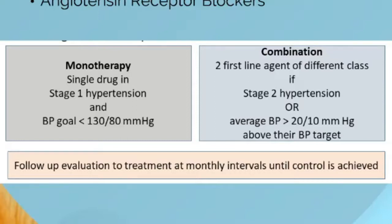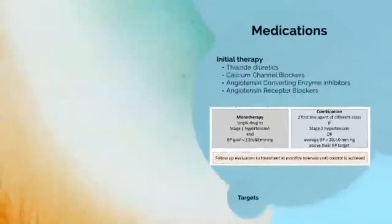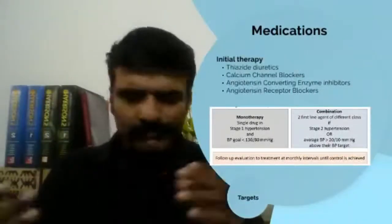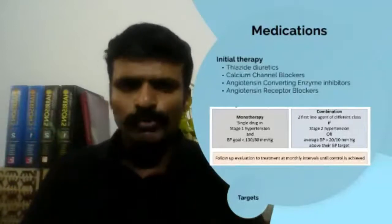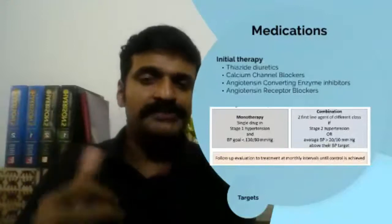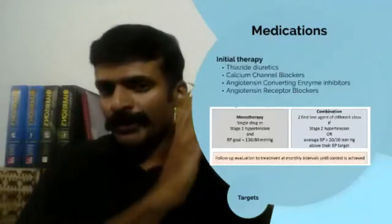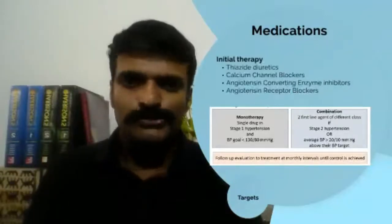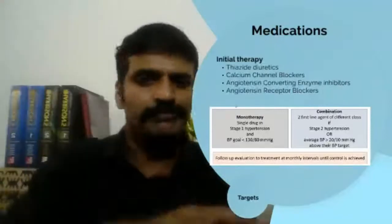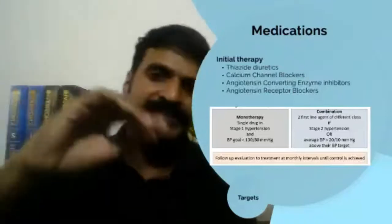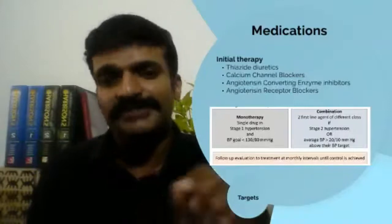In Stage 2 hypertension, or if the average blood pressure is more than 20 mmHg systolic or more than 10 mmHg diastolic above target, prefer to start with two drugs. The rule of thumb: Stage 1 high-risk — more than 10% ASCVD risk — give one drug; Stage 2 hypertension — start a combination of two drugs with different mechanisms. For example: hydrochlorothiazide with amlodipine, hydrochlorothiazide with telmisartan, or hydrochlorothiazide with losartan. These combinations are available and are what you would use in Stage 2 hypertension.